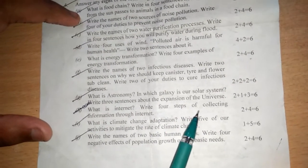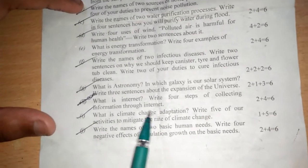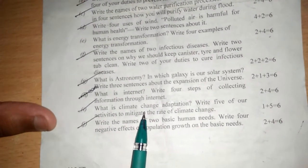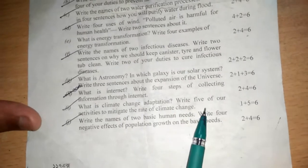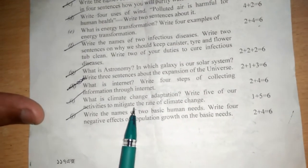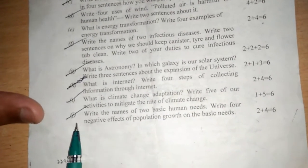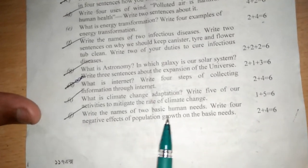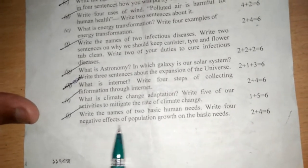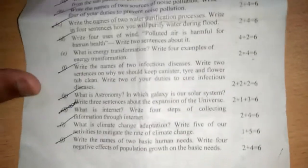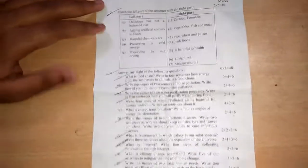Number H, what is internet? Write four steps of collecting information through the internet. Number I, what is climate change mitigation? Write five of your activities to mitigate the rate of climate change. Number J, write the names of two basic human needs. Write four negative effects of population growth on the basic needs. Now I am showing this page again.